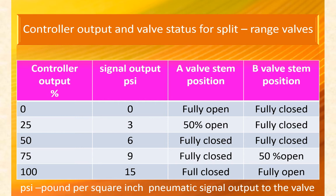At 100% controller output, signal output is 15 PSI: A valve fully closed, B valve fully open.